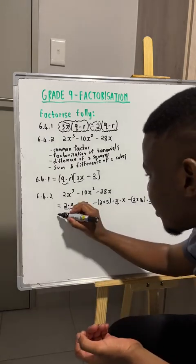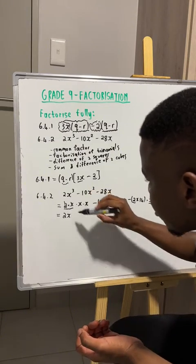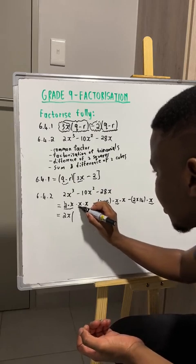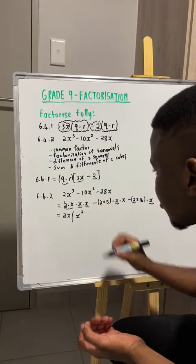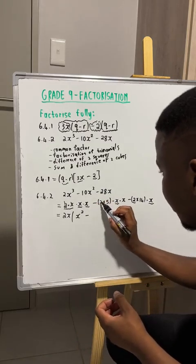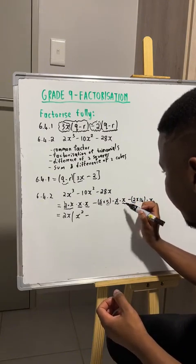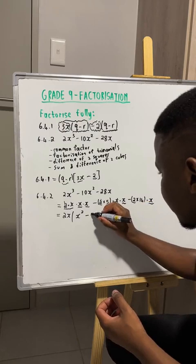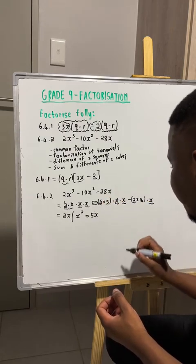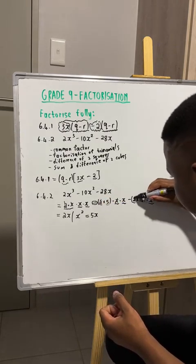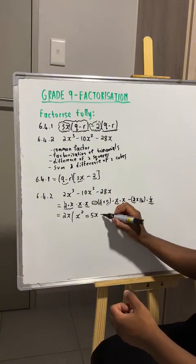So 2x is our common factor. If we take out 2x, for the first term we are only left with x multiplied by x, which is the same as x squared. For the second term, after taking out 2x, we are left with 5 multiplied by x, which is the same as 5x, and the sign will be negative because we had a negative sign there. For the third term, after taking out 2 and x, we are simply left with 14, and the sign will be negative.